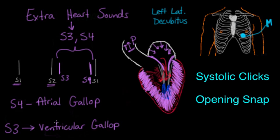S4 is always pathological — meaning it is always bad news. To wrap up, let's run through the original montage of heart sounds and murmurs to see if you can identify each one, with the label of which murmur it is appearing towards the end of each.